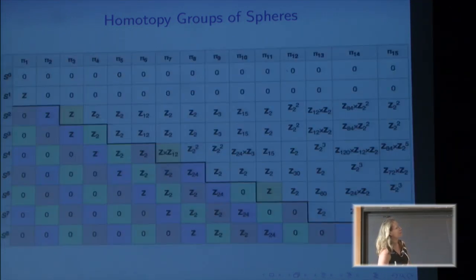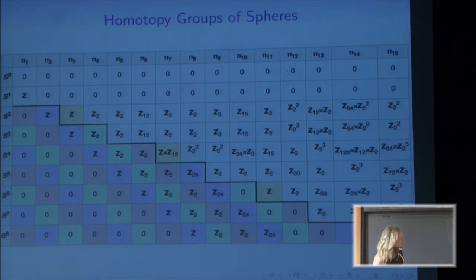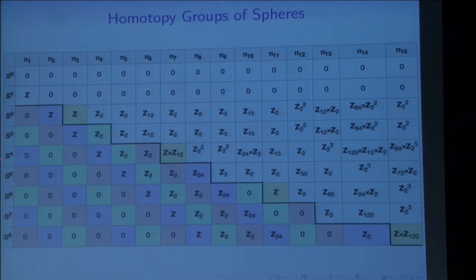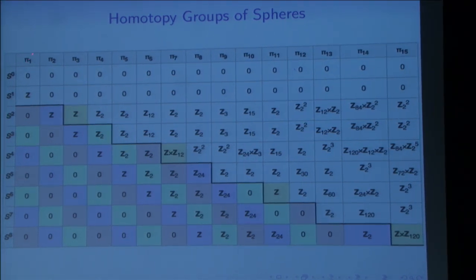This table represents a little bit of what we do know. Each of the groups here was obtained by very hard case-by-case brute force, often geometric computations. So what do we see here? These are the spheres: S^1, S^2, S^3 and so on. These are the homotopy groups π₁, π₂, π₃. For example, if you wanted to know π₅ of S^2, that would be Z mod 2.